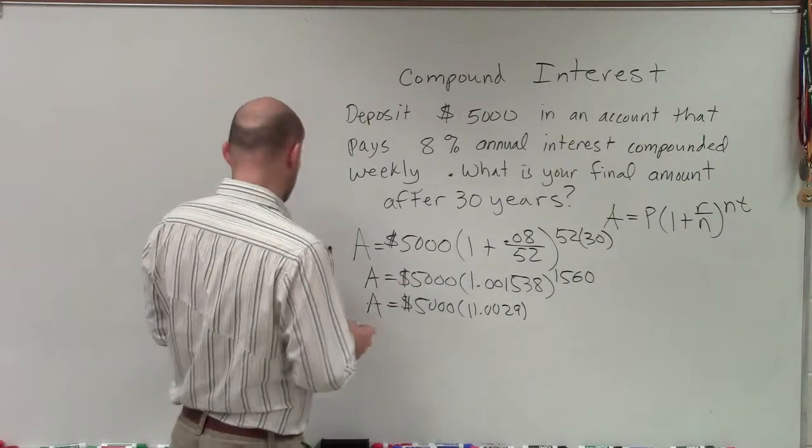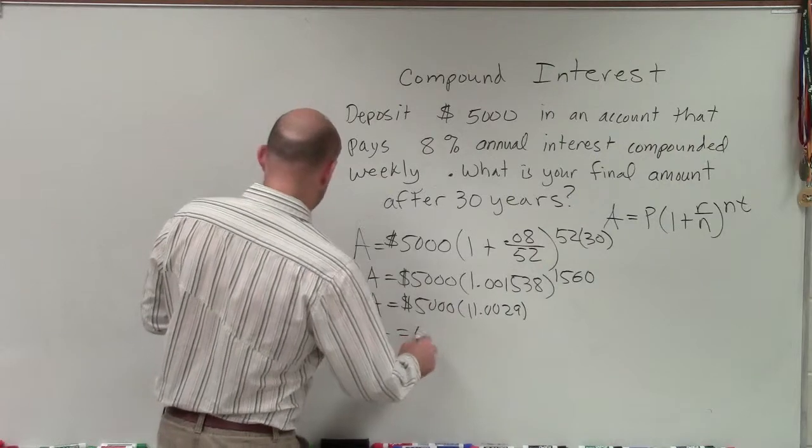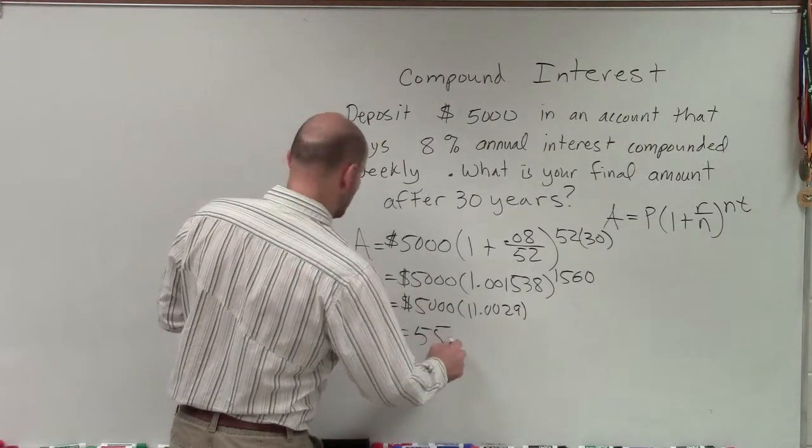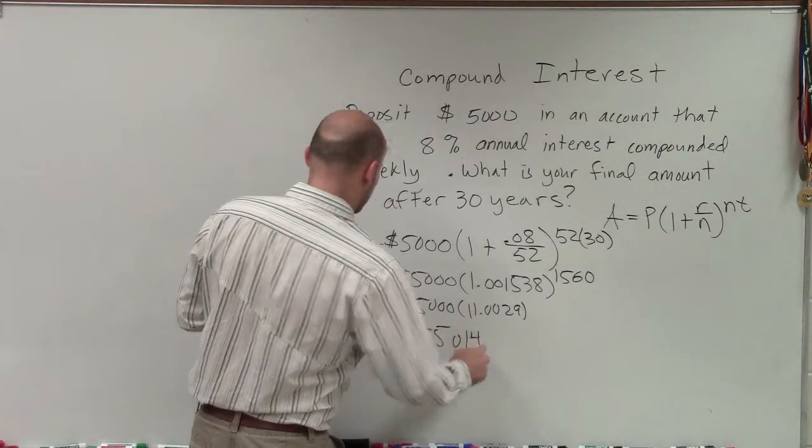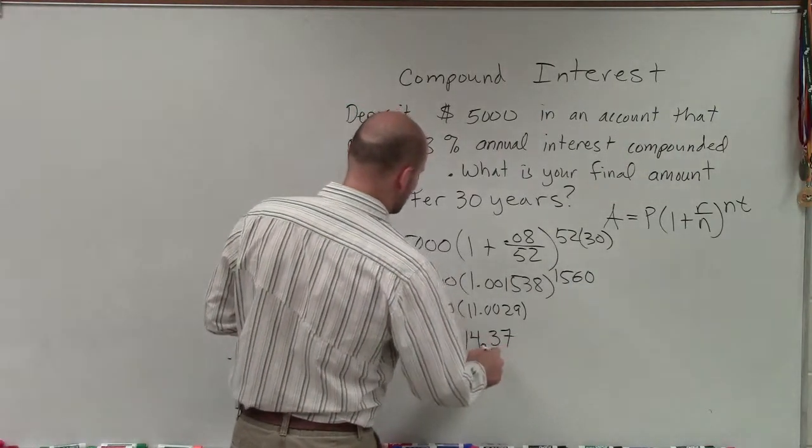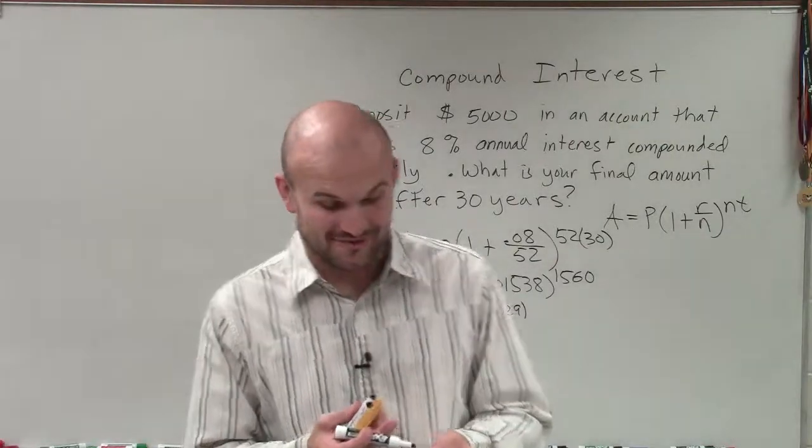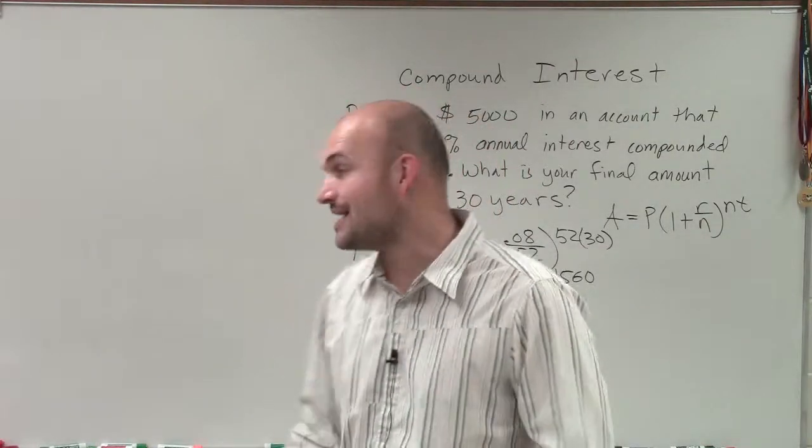But therefore, ladies and gentlemen, after 40 years, you will now have in your account $55,014.37. So that means if you could put $5,000 into an account and after 40 years have $55,000, that's not doing so bad. That's pretty good.